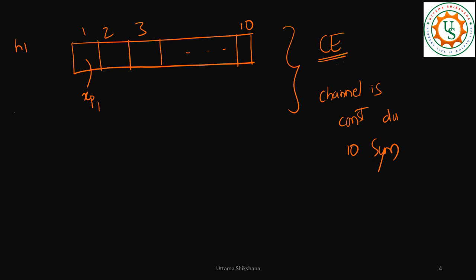So in the 10 symbols if the channel is constant, let's say that is just h1, then using the first symbol y1 equals h1·xp1 plus n1, here I have estimated h1 hat.